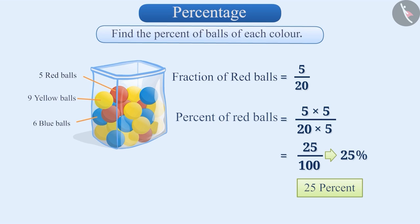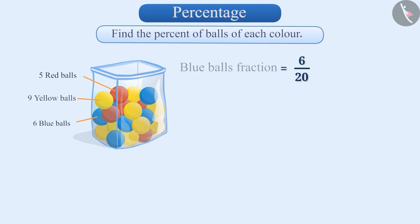There is another method for conversion. We will understand that while finding the percent of blue balls. Here, the fraction of blue balls is 6 by 20. We will multiply both its numerator and denominator by 100. Since we are multiplying the numerator and denominator by the same number, the value of the fraction will not change.